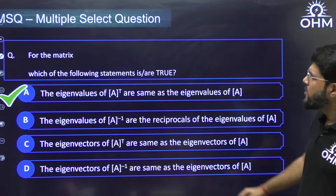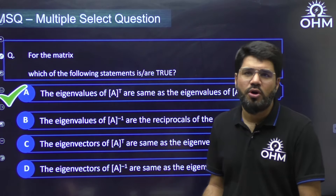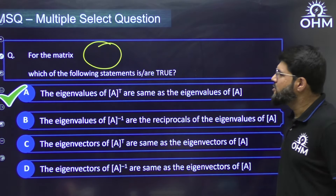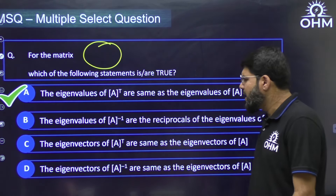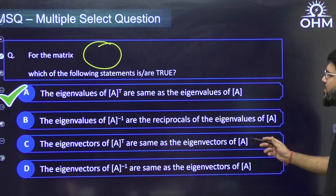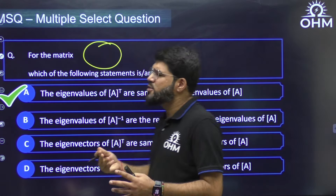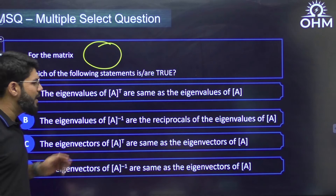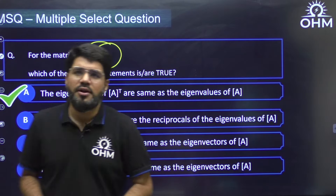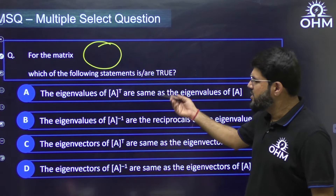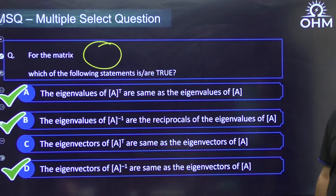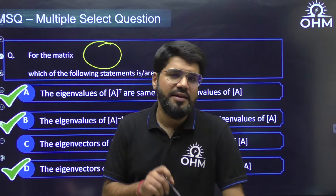Here's an example MSQ from GATE: for any matrix, which of the following statements is or are true? For instance: 'The eigenvalues of A-transpose are the same as eigenvalues of A.' These are generalized properties — you need to know the properties of eigenvalues and eigenvectors to answer correctly. The official answer for this question is A, B, and D — three options are correct.